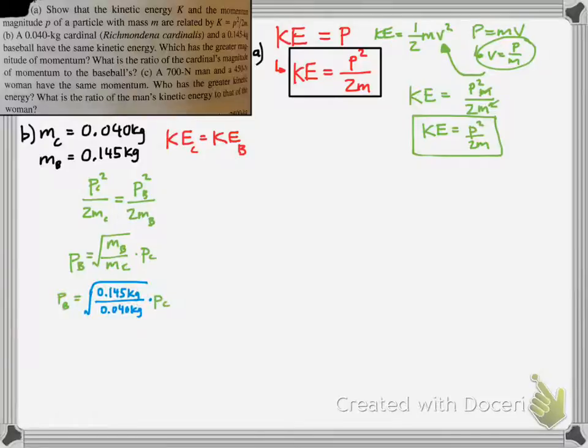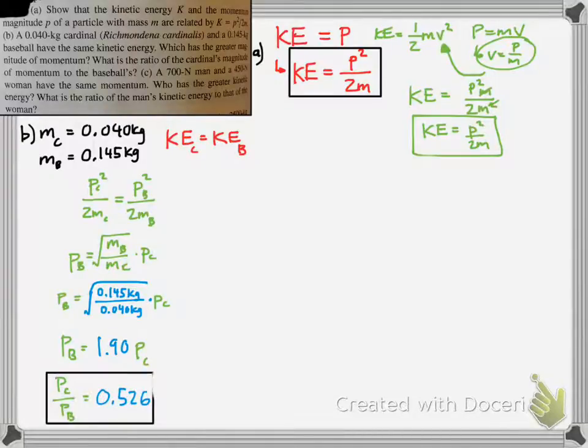The ratio of masses would stay under the radical, but the square root of p² is just p. Simply plug in the numbers that we were given, and you get the ratio pc/pb = 0.526. So which has more momentum? This is saying that the cardinal's momentum is half as great as the baseball's. In other words, the baseball has more momentum, almost twice as much.